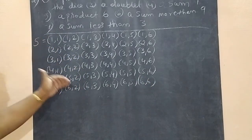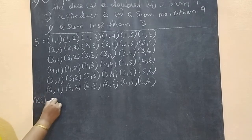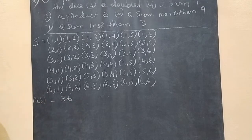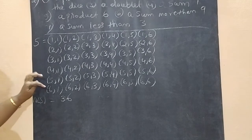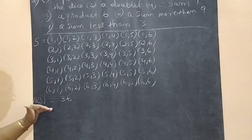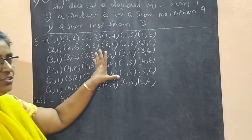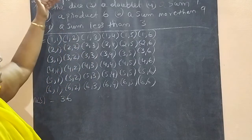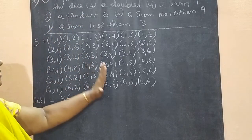So, like this you have to write in order. Total we are getting thirty-six — six lines, and we are getting thirty-six outcomes total. This is the sample space and the number of outcomes in the sample space. This you compulsorily have to write, since for getting the answers for particular events, you have to refer to this.